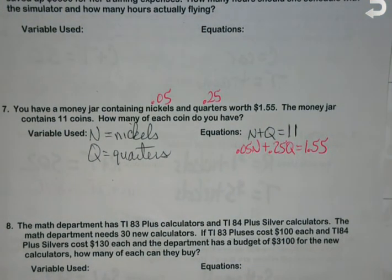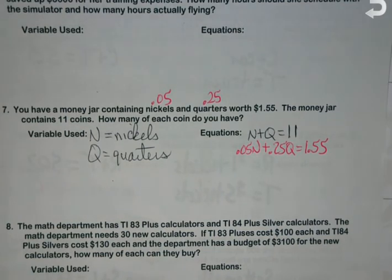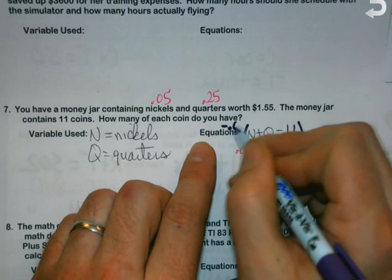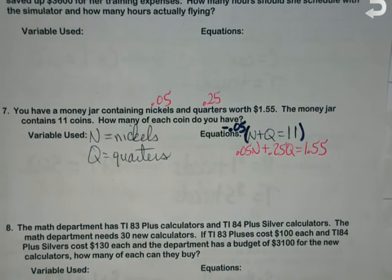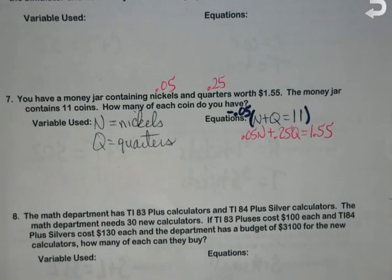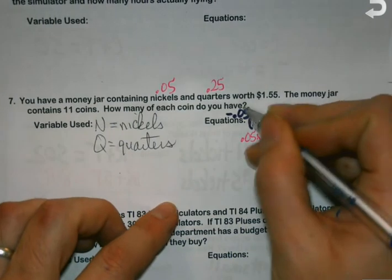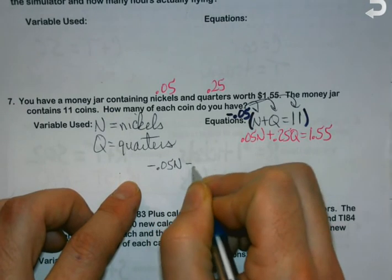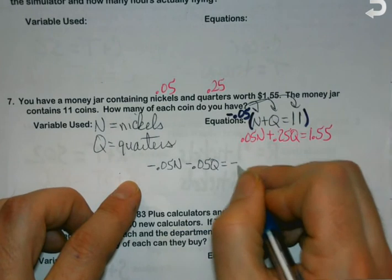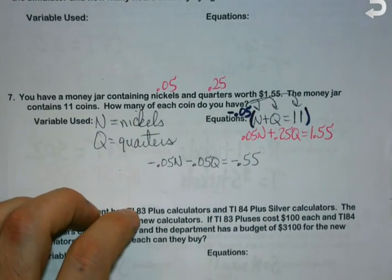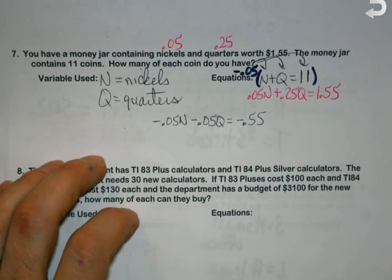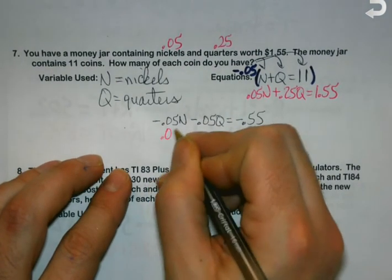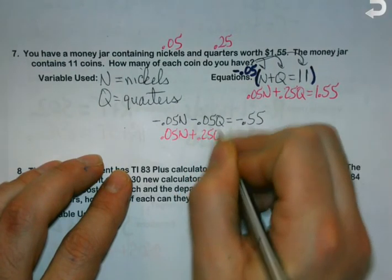My second equation, I have to put values with things. How do I write down the value of a nickel as a decimal? Point zero five. What about a quarter? Point two five. So when I go to make my equation, the price of a nickel goes with nickel, how much a quarter's worth goes with a quarter, and then the amount of money I have comes in at the end.